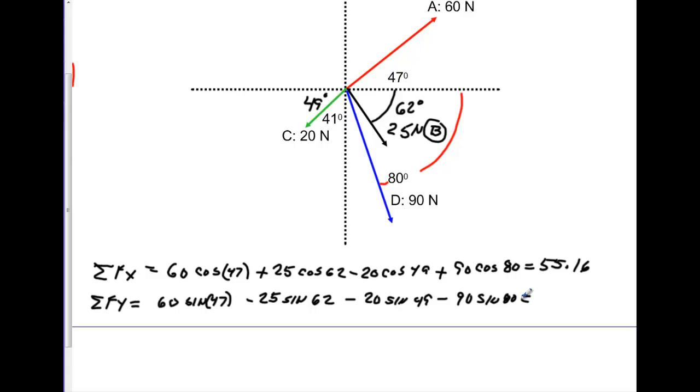We're going to add those values up. 60 times the sine of 47 gives us a value of 43.88. We're going to subtract 25 times the sine of 62. That gives us a sum of 21.81. We're going to subtract 20 times the sine of 49. That gives us a sum of 6.71. And now we're going to subtract 90 times the sine of 80. And that gives us a sum of negative 81.92. Again, the units here are going to be newtons and newtons.